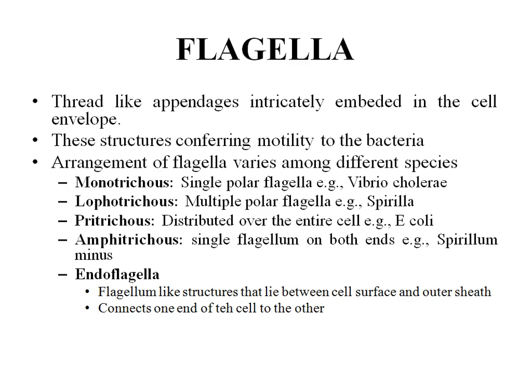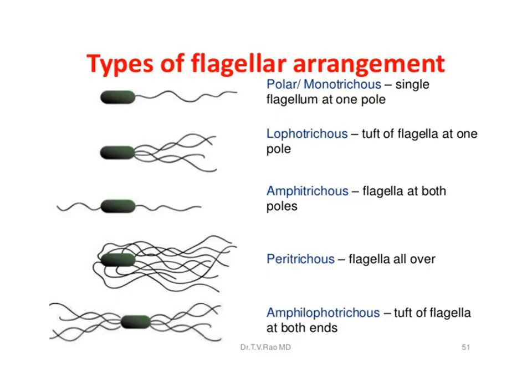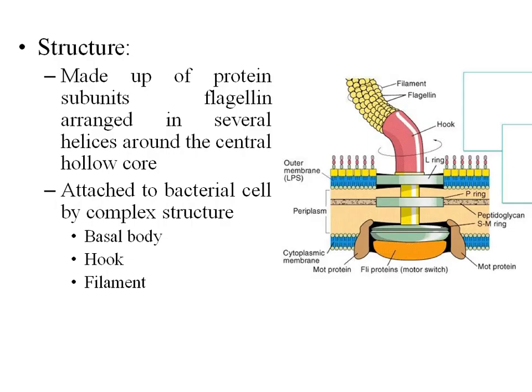There is one more type of flagella called endoflagella. This is a flagellum-like structure that lies between the cell surface — that is, between the cell membrane and the outer membrane — in what we call the periplasmic space. It connects from one end to the other end of the cell and also confers motility to the bacteria. An example of bacteria with endoflagella is Treponema pallidum.